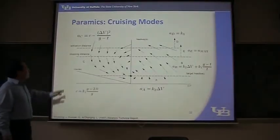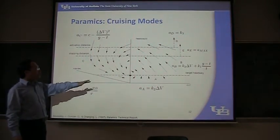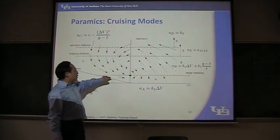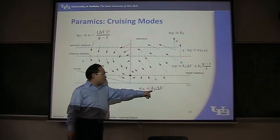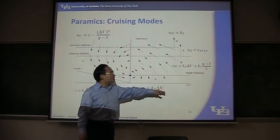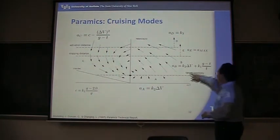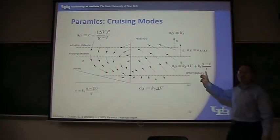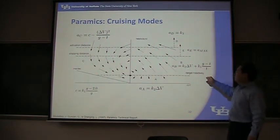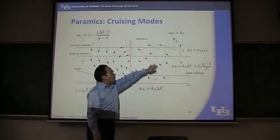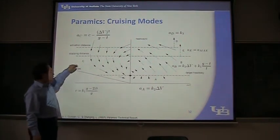They divided the figure area into three sub-areas. In the area under the dashed-line target headway, the acceleration will be a constant multiplied by delta V — they used this equation, and later changed it to add k3 multiplied by another term, but it doesn't matter because k3 is very small. The k2 and k1 are equal to 1. The third area is restrained by the maximum deceleration, so there's no point beyond it because you cannot exceed the maximum deceleration.